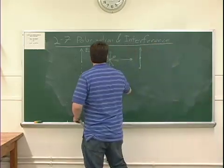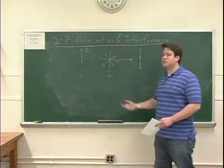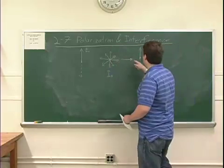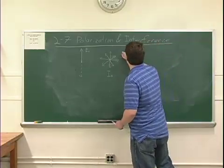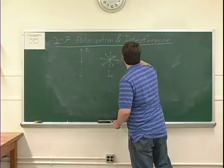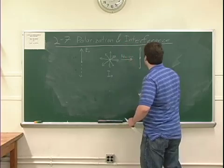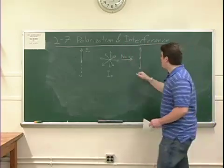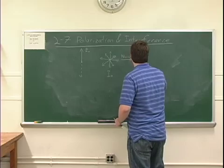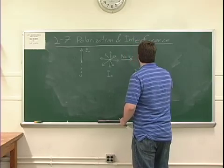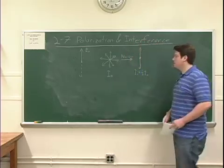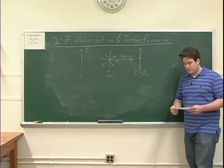If this initial unpolarized light has some intensity I0, we know that after passing through one polarizer and becoming linearly polarized light, this intensity, let's call it I1, will be one-half of the original intensity I0.